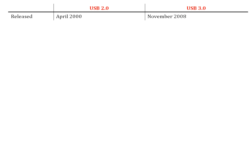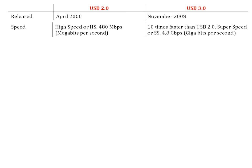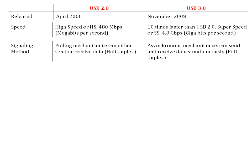USB 2.0 was released in April 2000 and USB 3.0 was released in November 2008. In terms of speed, USB 2.0 is High Speed (HS) at 480 Mbps, while USB 3.0 is 10 times faster at Super Speed (SS) at 4.8 Gbps.